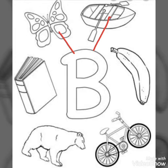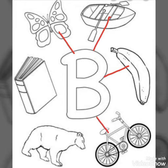Moving to the next B. B for banana. Banana is a fruit. It is yellow in color. Here comes B. B for bicycle. We all love to ride a bicycle.